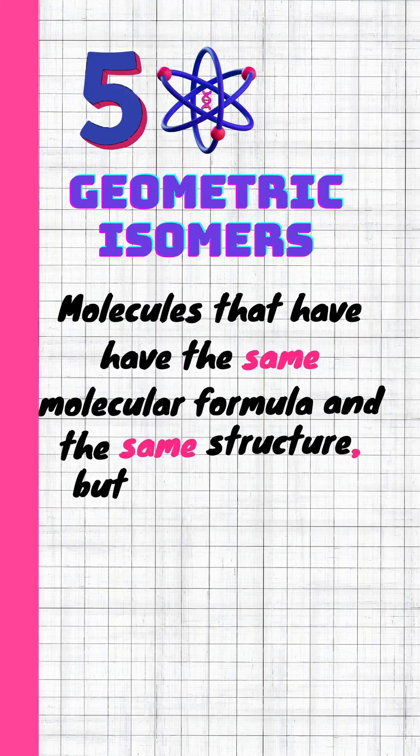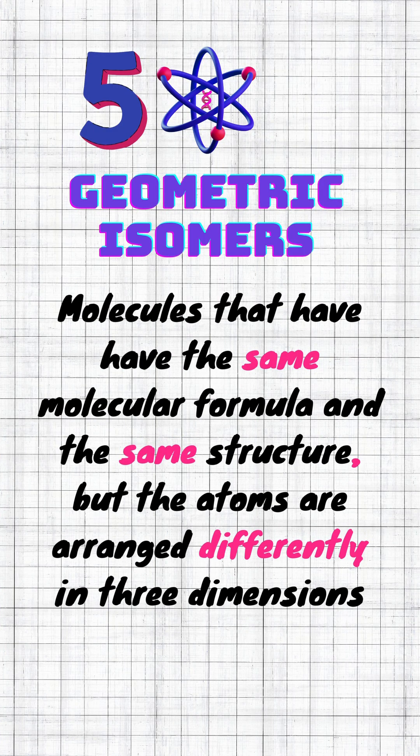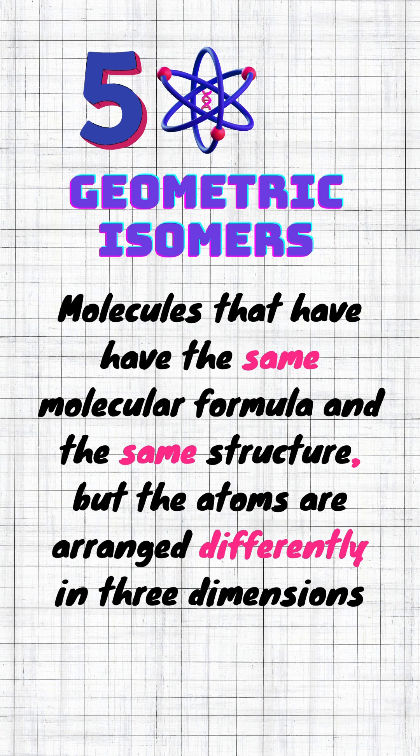The last definition in our list: geometric isomers, which are molecules that have the same molecular formula and the same structure, but the atoms are arranged differently in three dimensions.